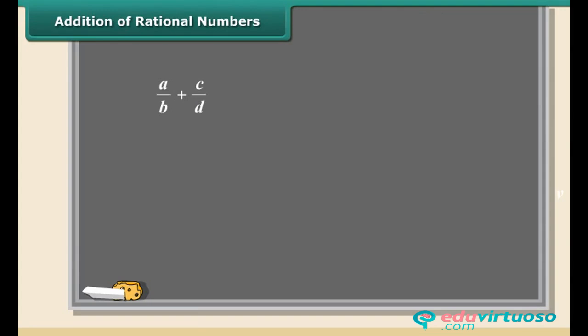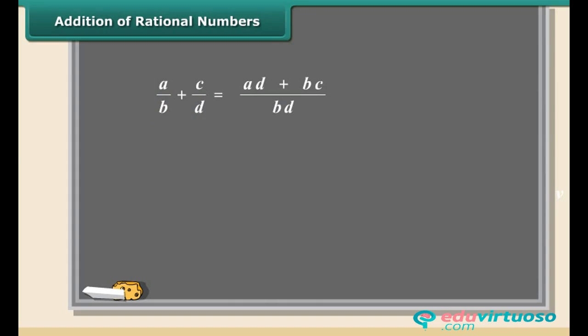How to add rational numbers? It's easy. Before we add, keep in mind the rational numbers should have the same bottom number — that is, both rational numbers must have a common denominator. The easiest way to do this is to multiply both parts of each number by the bottom part of the other.